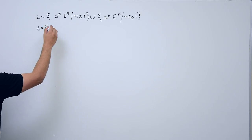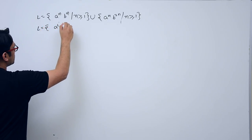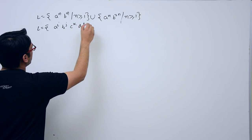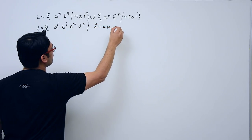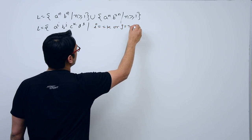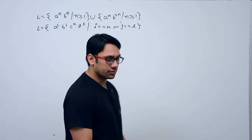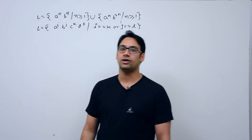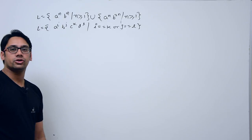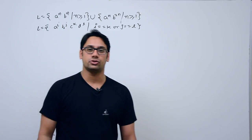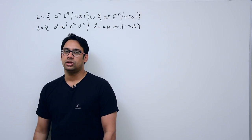Assume the second language is a^i b^j c^k d^l such that i equals k or j equals l. We have these two languages, and for both of them you cannot make a deterministic pushdown automata — you have to make a non-deterministic pushdown automata. Non-deterministic pushdown automata is more powerful than deterministic pushdown automata because it accepts more languages.